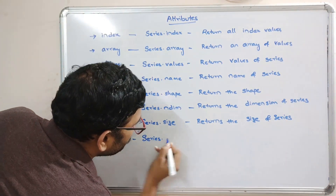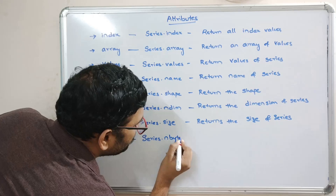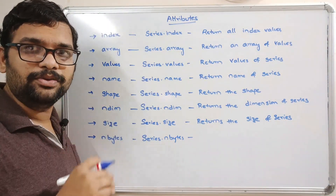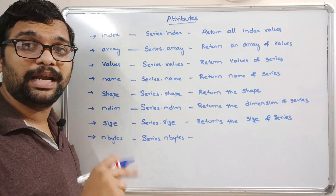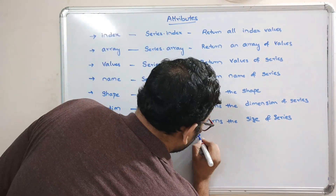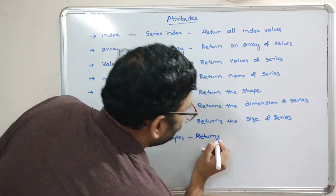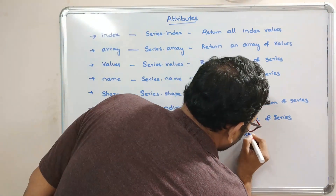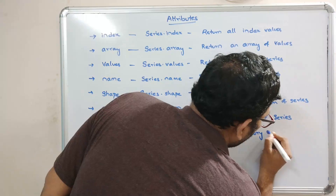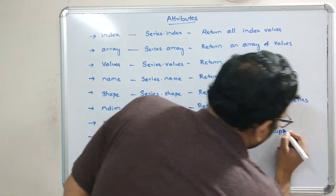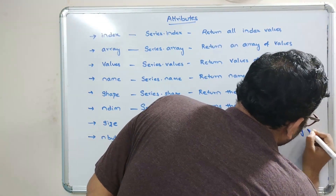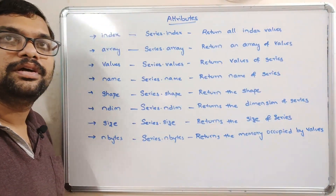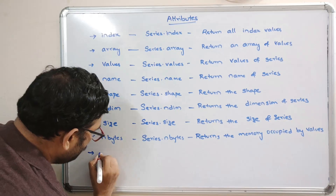The next attribute is nbytes. The syntax is series.nbytes, which returns the memory occupied by the values — the memory occupied by the values only.